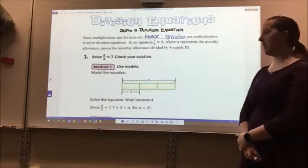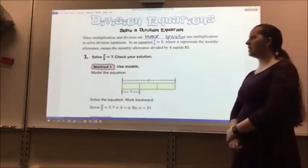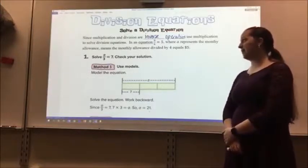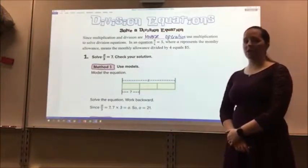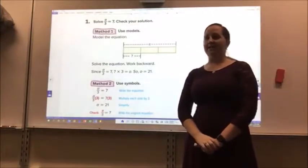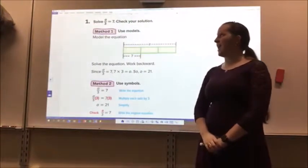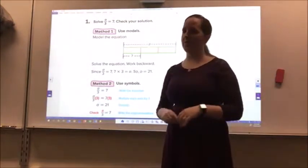In the equation, A divided by 4 equals 5, where A represents the monthly allowance, means the monthly allowance divided by 4 equals $5. That bar, the fraction bar, also represents division.